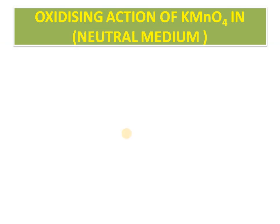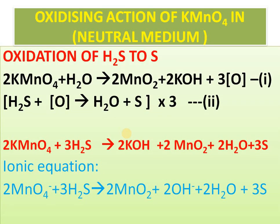For neutral medium, only one reaction is mentioned at this level. 2KMnO4 + H2O gives 2MnO2 + 2KOH + 3O; then H2S + O → H2O + S. Multiply by 3 because there are 3 nascent oxygen atoms on the product side and we need to cancel them out. After writing, you get the final balanced equation. Here sulfur has oxidation number −2 in H2S and 0 in S — that is oxidation. KMnO4 undergoes reduction and acts as oxidizing agent. The ionic equation can be written by separating 2K+ and 2MnO4−, keeping 3H2S as molecular, to get the products 2MnO2 + 2H2O + 3S.